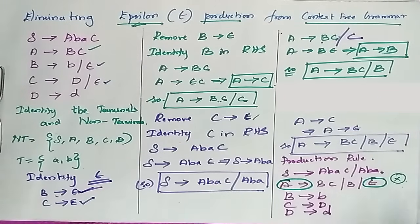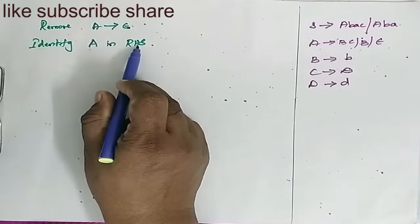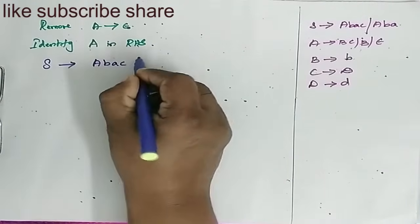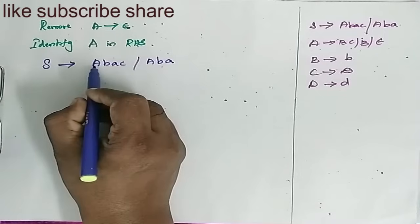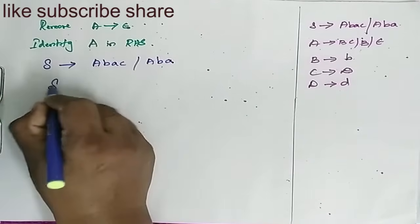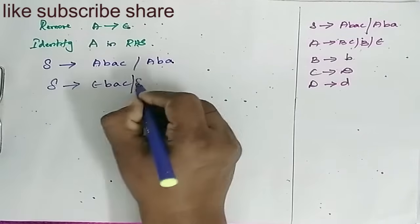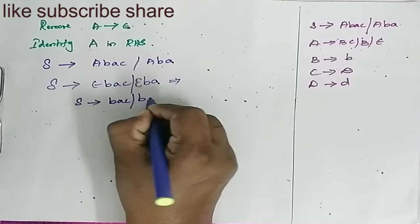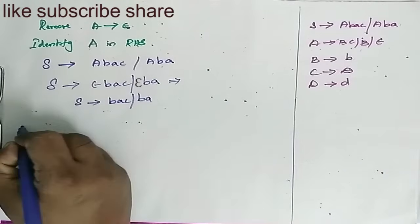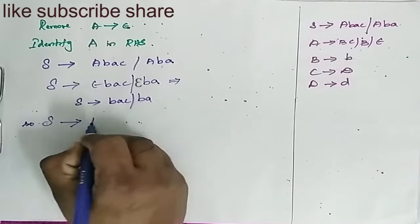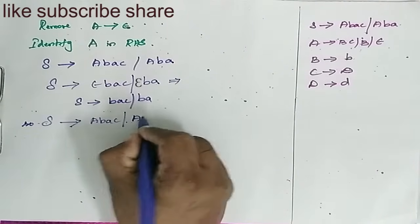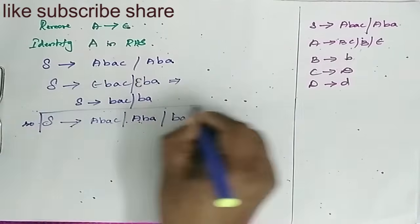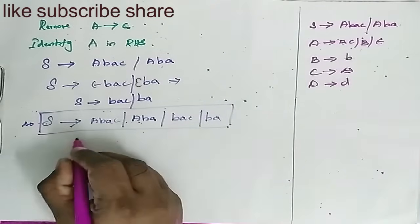Since we obtained A → ε, this must also be removed. Identify A in the right-hand side. We have S → ABAC | AB. Substituting epsilon for A, S → εBAC becomes S → BAC | B, giving S → ABAC | AB | BAC | BA | BAC | BA.